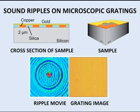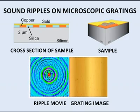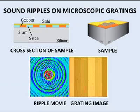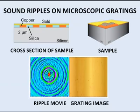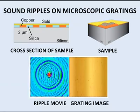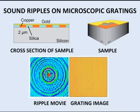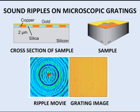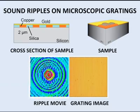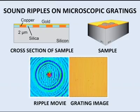Our grating is made of tiny copper and silica strips on a silicon slab, and this is coated with gold. We fire our laser pulses repetitively at the centre of a 150 micron square area. This movie is slowed down a thousand million times.